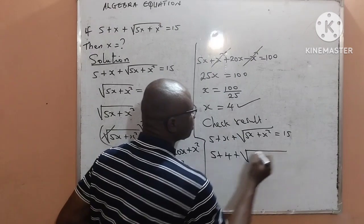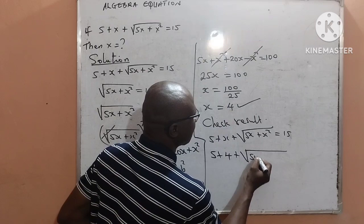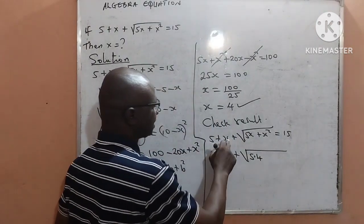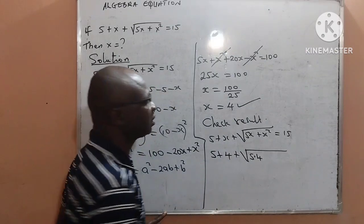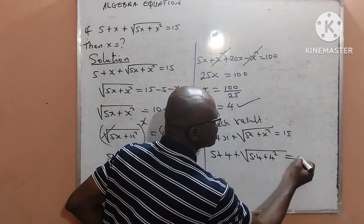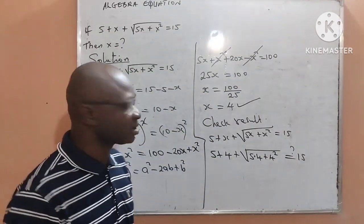Square root of 5 multiplied by 4 because x is 4, then plus 4 raised to the power 2. Will this result to 15? It is a question we want to find out.